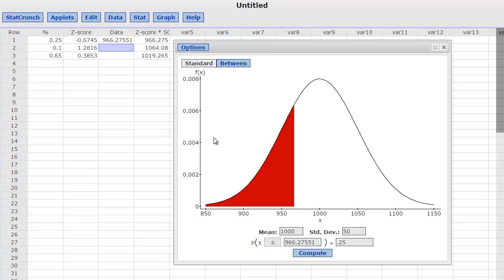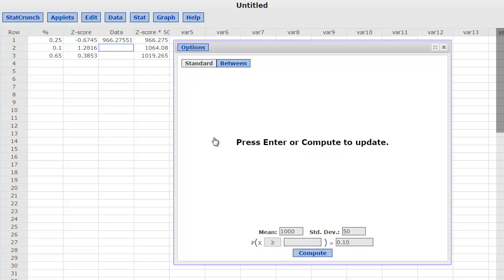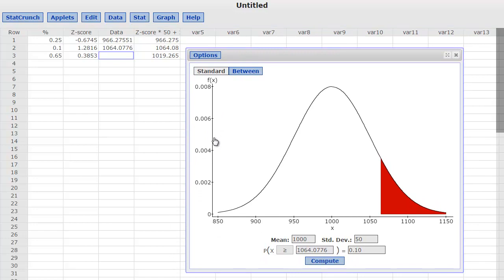And of course, then we wanted the highest 10%. So I switch that to 10% like this, and I hit compute. And there it is. And there's my 1,064.0776. Rounded to two decimal places. But there it is.